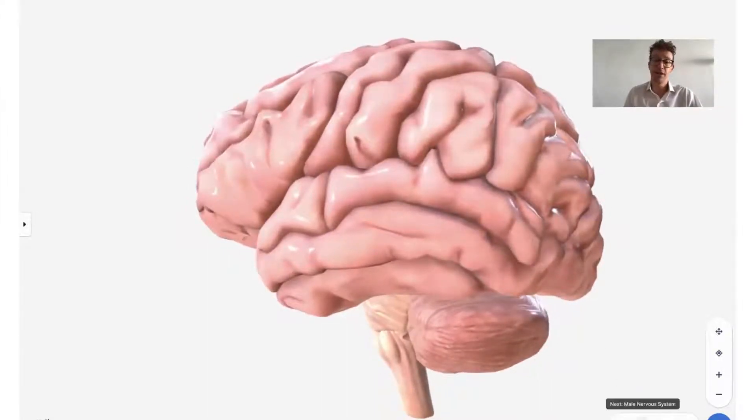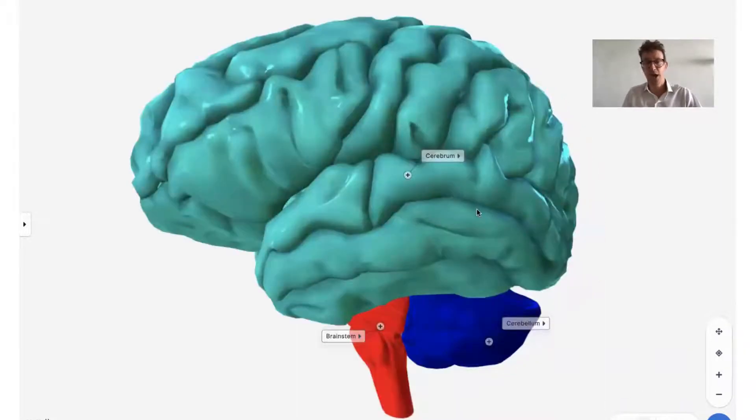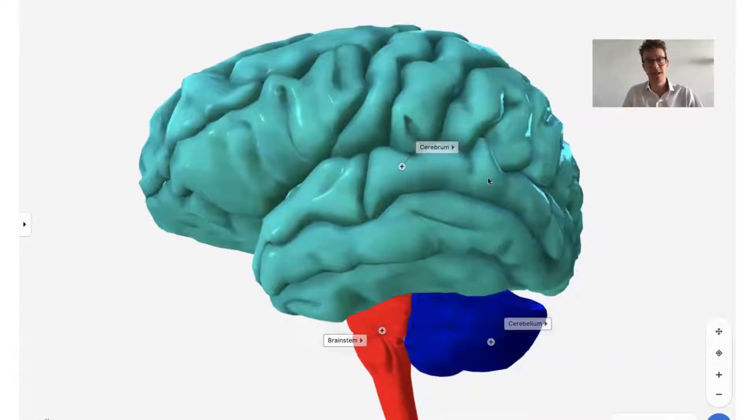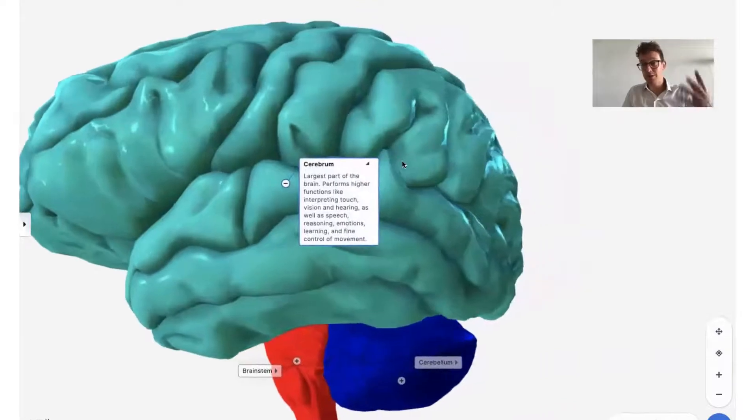Let's take a look at the brain itself first, just to get ourselves orientated with the parts of the brain so we can know which areas are affected by Alzheimer's disease. Using the Biodigital Human software, Human Studio, I just colored the cerebrum, the largest part of the brain, in turquoise, and added this label just to show people that this is the area that deals with higher function, so things like vision, hearing, and speech.